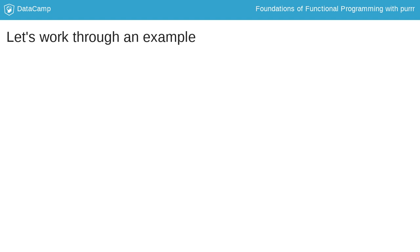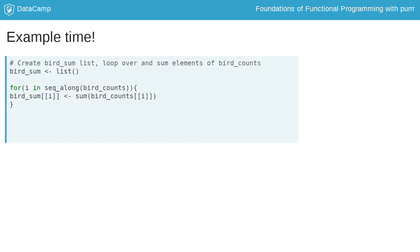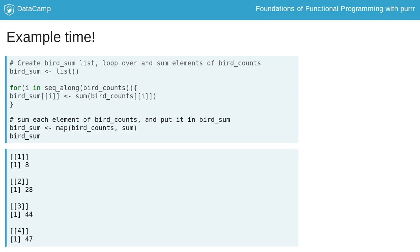In this example, we are going to be working with a list called bird_counts, where each element contains a different string of numbers. Each element represents one park, and the counts are the numbers of birds migrating over the park on a given day in the month of September. Different parks counted birds for different numbers of days, so they have different lengths. If we want to determine the sum of the numbers in each element, we can do it two ways. First, we can use four lines of R code, including a for loop, to iterate over the elements, putting each element into the sum function, and then putting the result into a new list called bird_sum. Or we can use one line of purrr code to calculate the sum of each element of the bird_counts list and put it into the new bird_sum list.